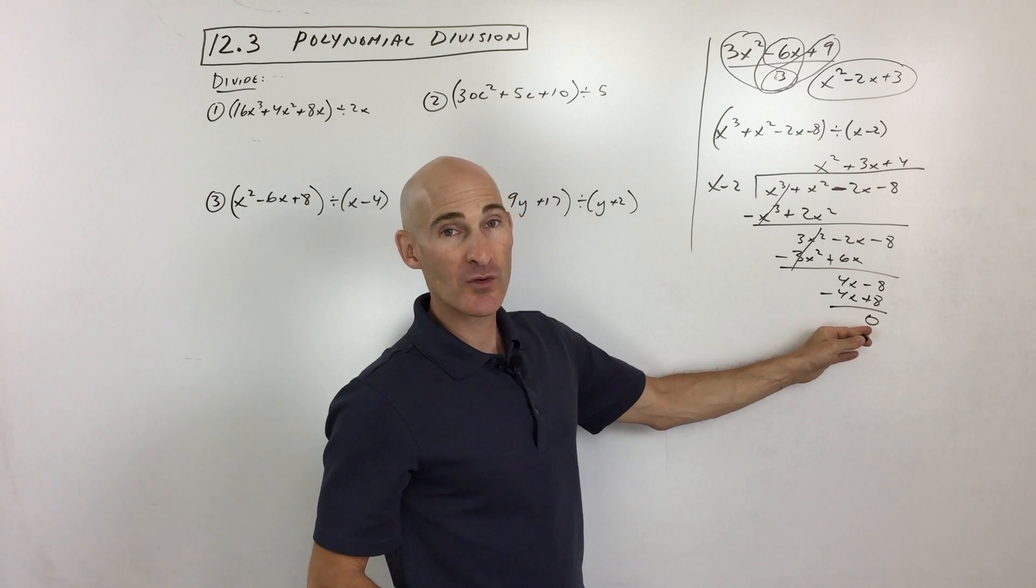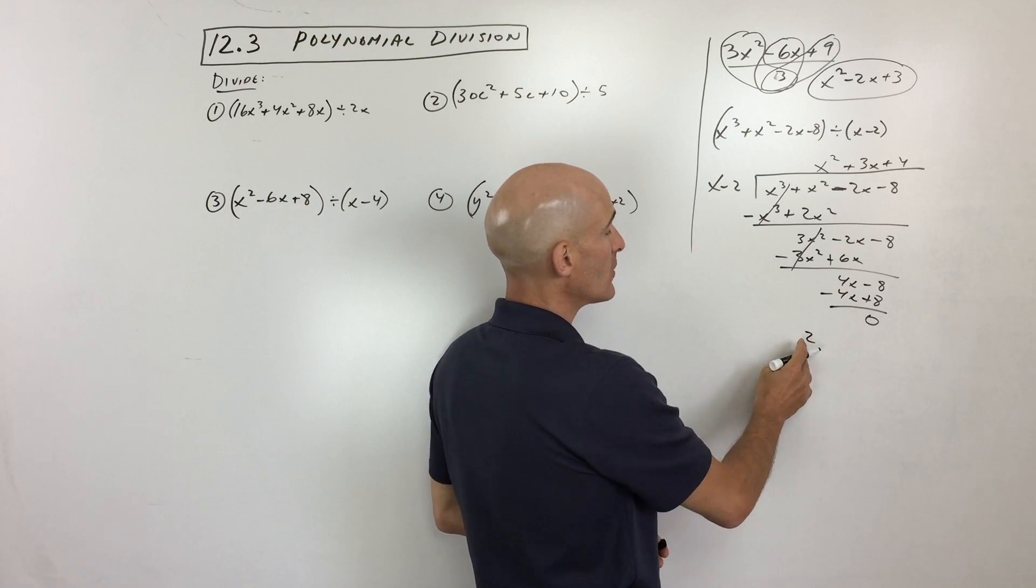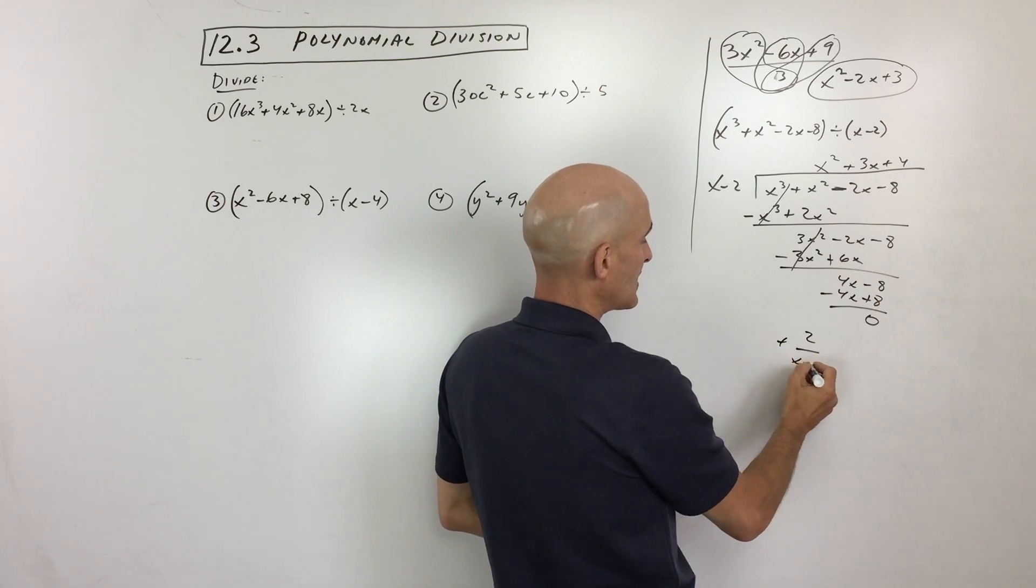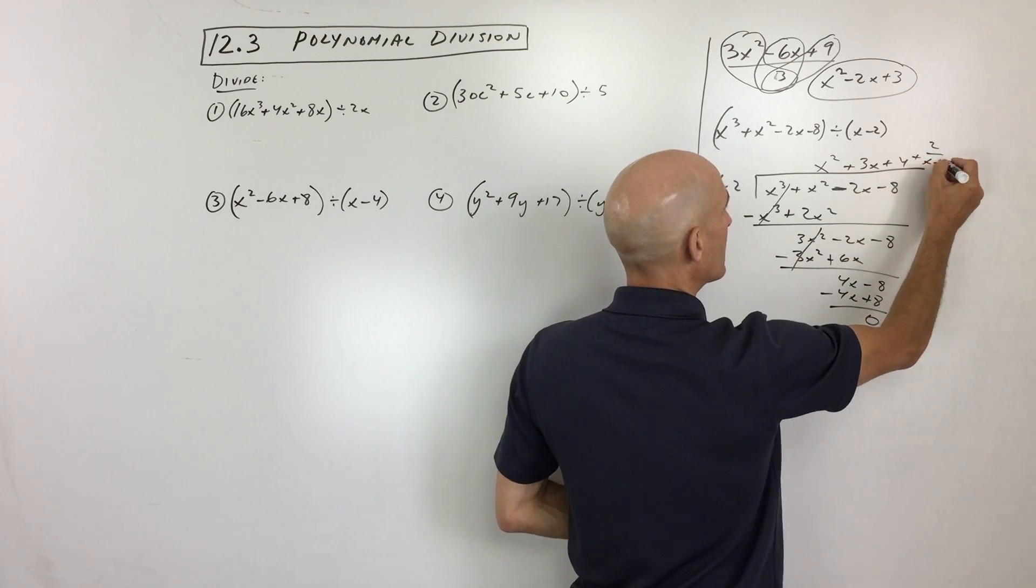Now, if the remainder, there was not 0. Like, say the remainder was 2. What do you do with the 2? Well, you would then take the 2, and you would add that, and say it'd be plus 2 over x minus 2. So you would add that on right over here on the end.